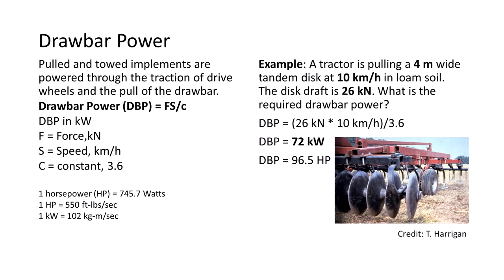For example, consider a tractor pulling a 4-meter wide tandem disc at 10 kilometers per hour in loam soil. The disc draft or pulling force is 26 kN. The drawbar power equals the product of 26 kN times 10 kilometers per hour divided by 3.6, or 72 kW.